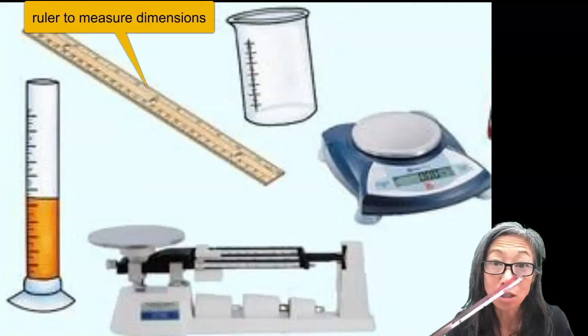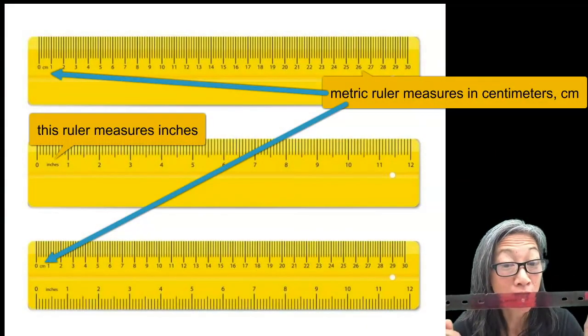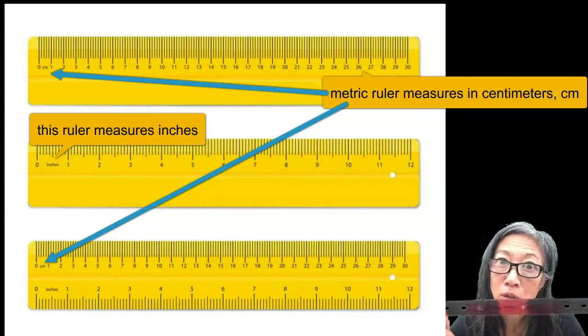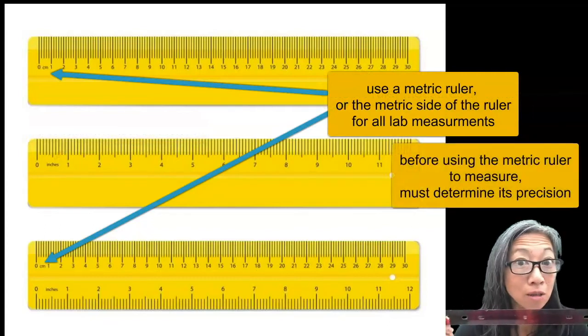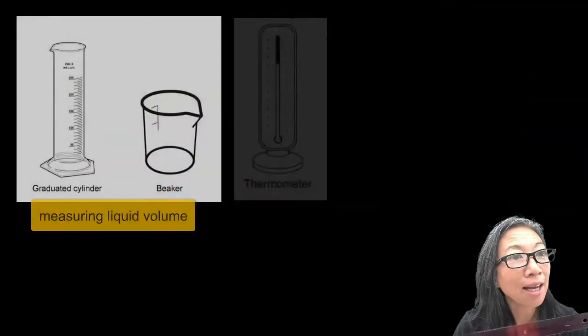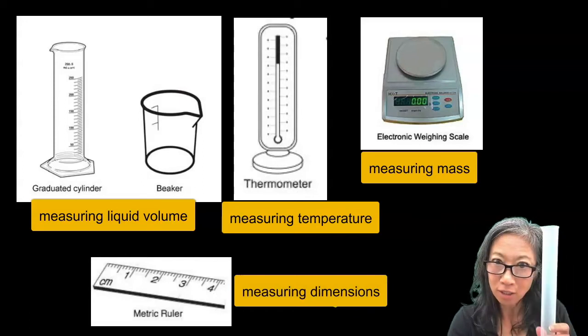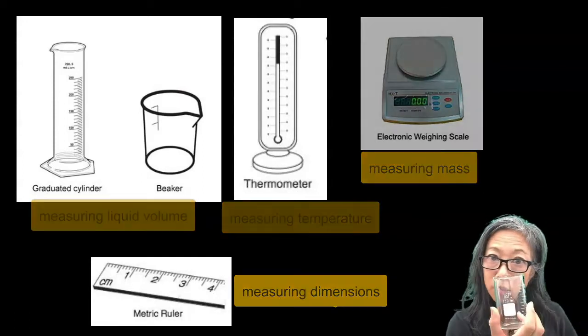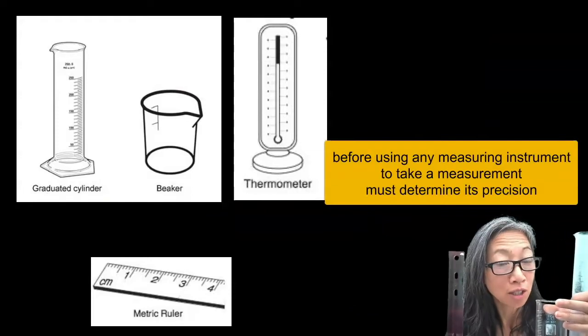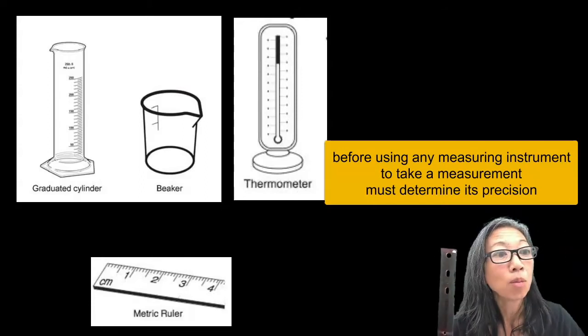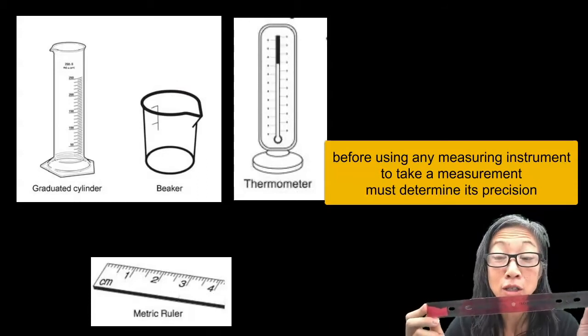So before actually using this ruler to measure those dimensions, you first need to determine the precision of this ruler. What does this ruler measure to? The tenths place, the hundredths place, the thousandths place, or maybe none of those? The precision of any measuring instrument, that's anything you use to measure like this ruler, or this graduated cylinder, or this beaker, all of these items are measuring instruments used in science. Before we can actually use any measuring instrument like this ruler, we have to determine the precision.